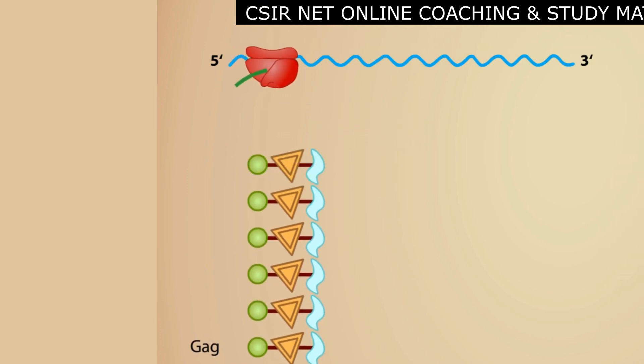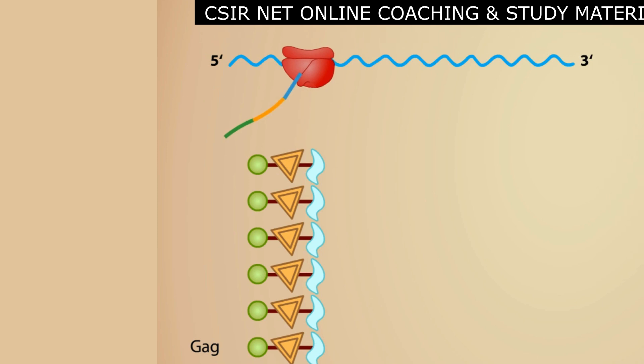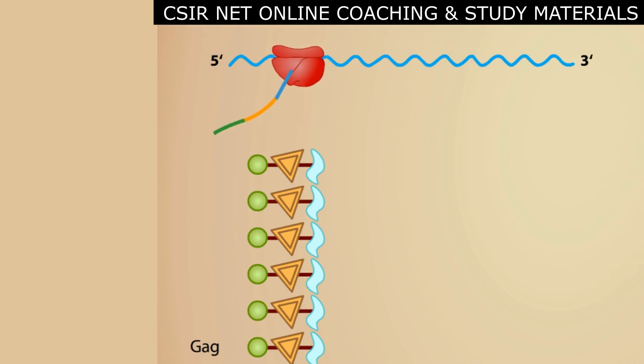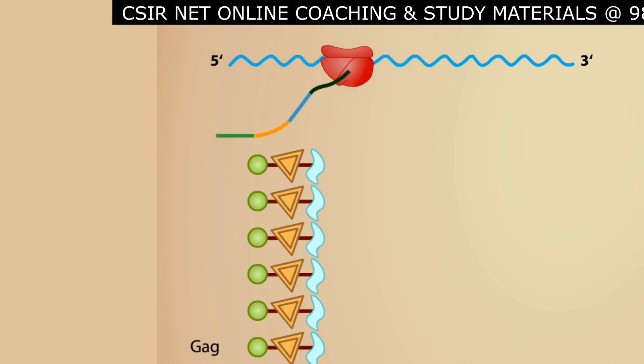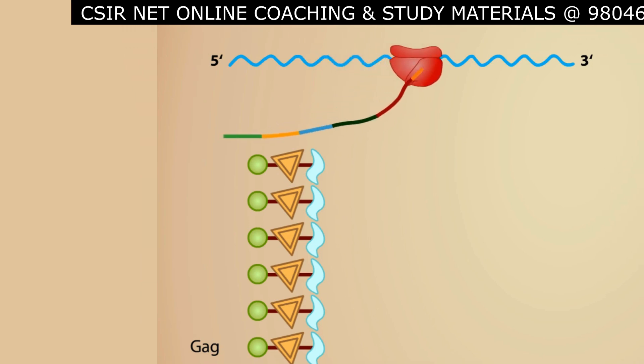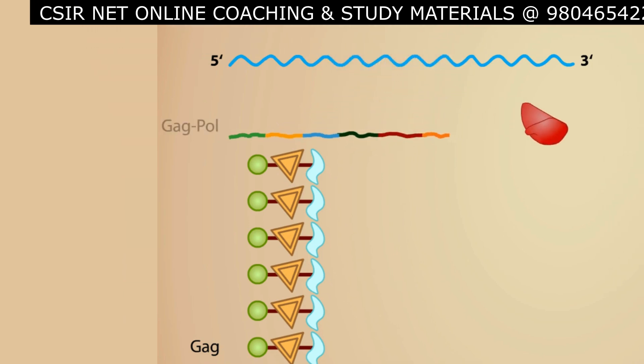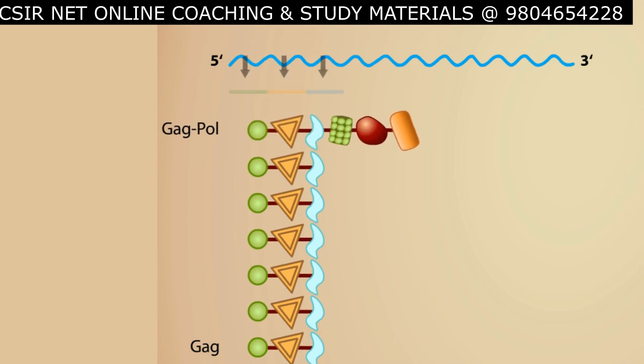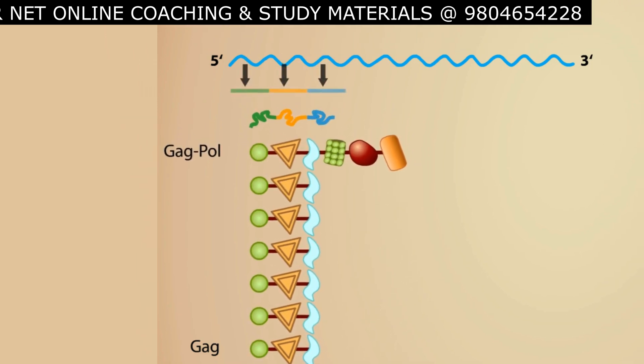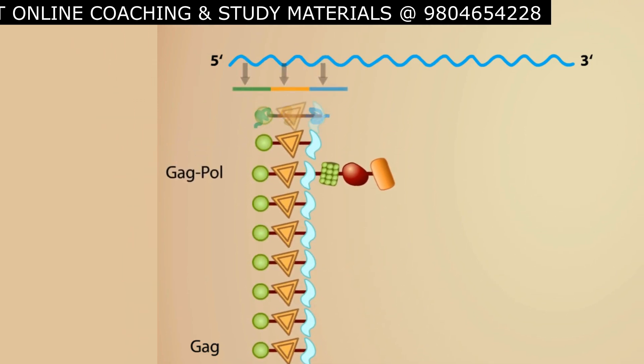Occasionally, however, a frame-shift event occurs causing the ribosome to begin reading the mRNA in a different reading frame, bypassing the stop codon and producing a larger protein called GAG-POL. In this way, the cell produces many GAG proteins and a few GAG-POL proteins.